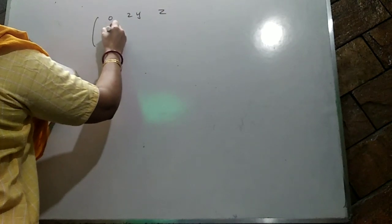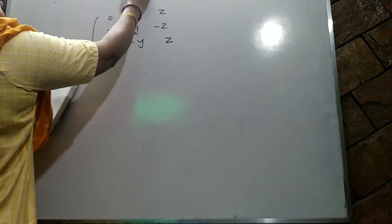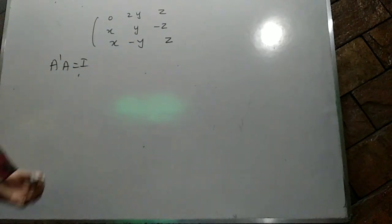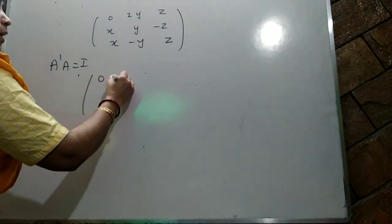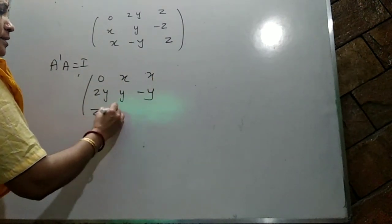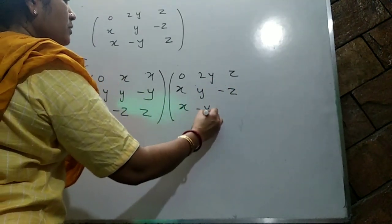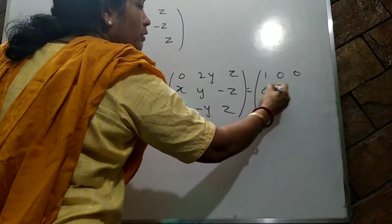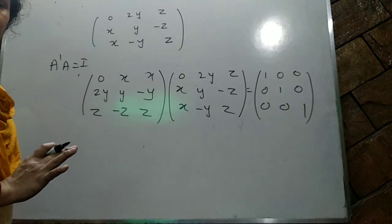A transpose is [0, x, x; 2y, y, -y; z, -z, z]. So A transpose times A equals the 3×3 identity matrix. You know how to do matrix multiplication — multiply them and equate corresponding elements to get the values of x, y, and z. Can you do it?